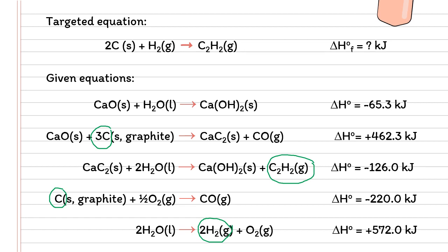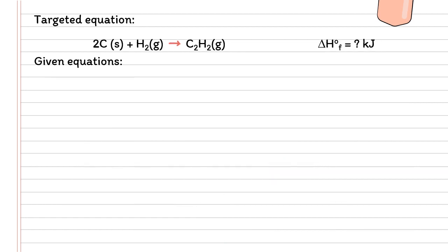You cannot simply ignore the other species. For this type of question, you need to use all of the equations — they will balance everything so that you get your targeted equation. So let's proceed with the modifications. We are going to focus on the circled equations first, then go for the ones that are not circled. We are going to modify the given equations to suit the targeted equation.